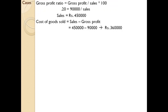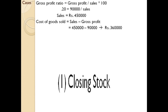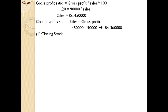Why are we finding cost of goods sold? It can be used to find the amount of closing stock. If you go through all these cases you will understand why we use each step — there is a purpose for finding each step. There is a reason for every ratio and every amount we use in this preparation of balance sheet.